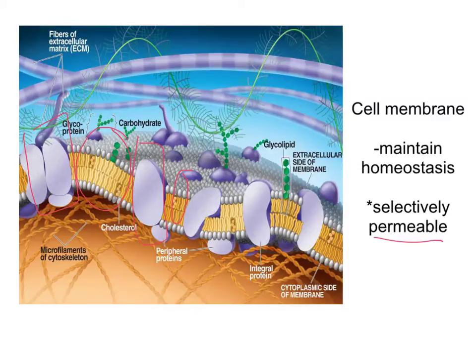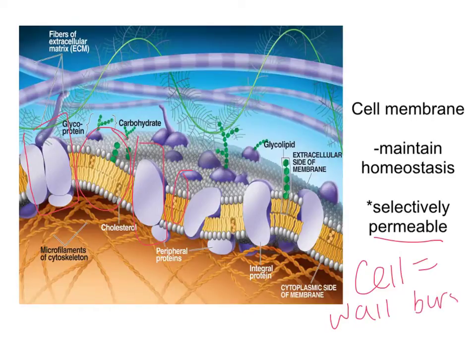It's going to be different than the cell wall in that sense. The cell wall's job is to prevent bursting — to prevent the cell from bursting or exploding. The cell wall is really permeable; it allows virtually everything to go into the cell.